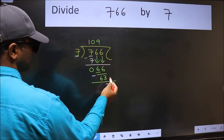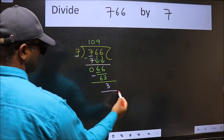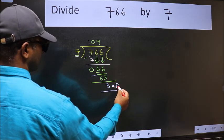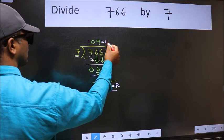No more numbers to bring down, so we stop here. This is our remainder and this is our quotient.